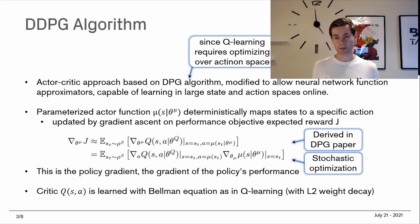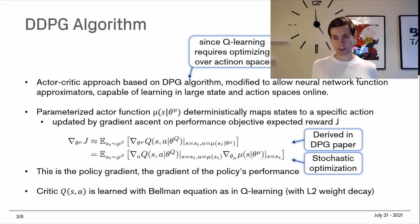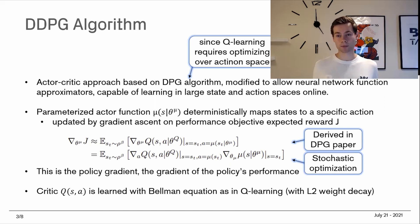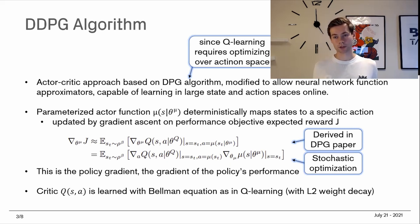Gradient ascent doesn't guarantee you'll reach a global maximum, but on a greedy basis it takes you in the right direction. The critic — approximating the Q value — is learned with the Bellman equation, just as in Q-learning, because approximating the Q value function doesn't require optimizing over states. In this paper they used an L2 weight decay on the parameters of the Q function, but that's a detail.